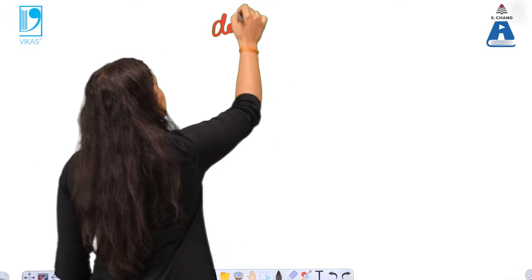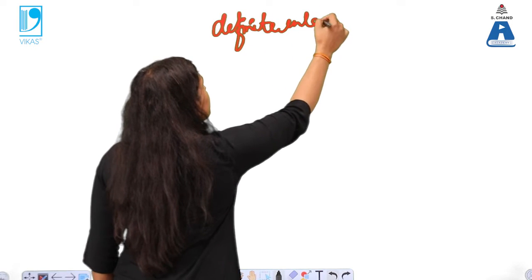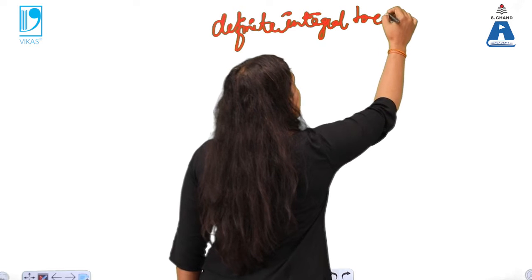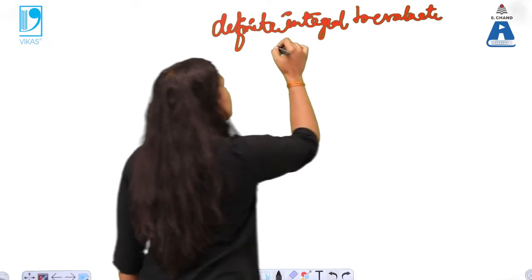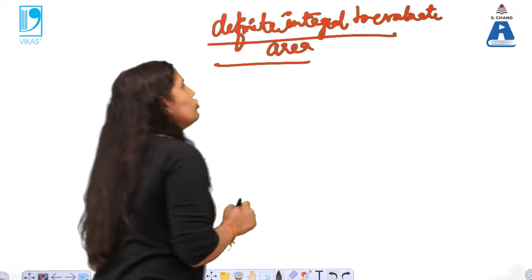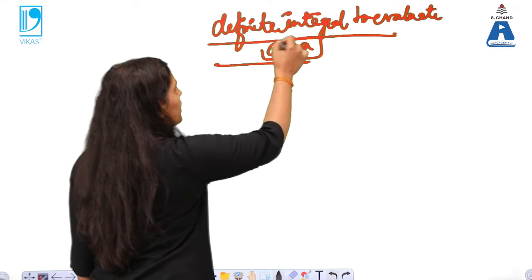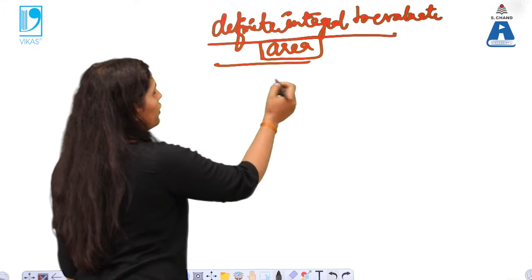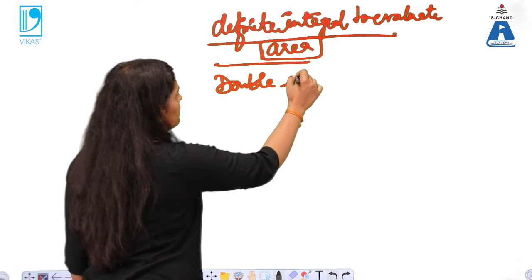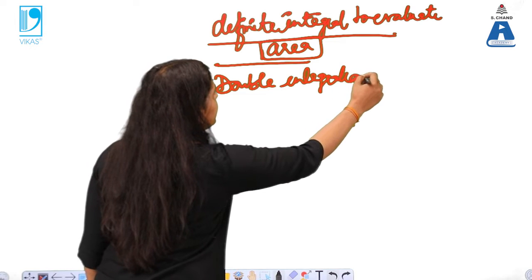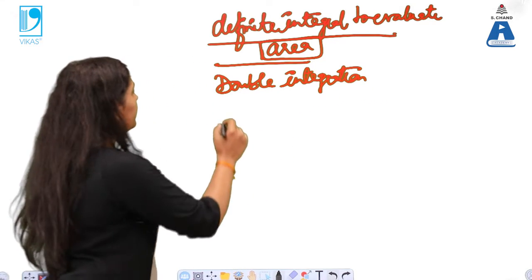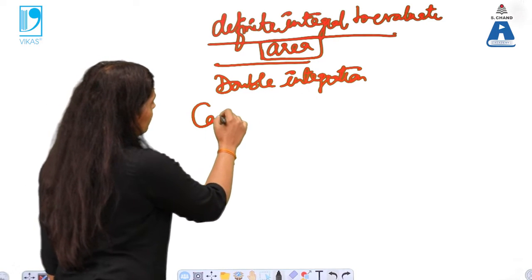How to use applications of definite integrals to calculate area. Definite integral means that you are given the limits. In case you are not given the limits, you should learn how to get the limits to calculate the area of such a region. We will calculate area by double integration — this is something new you are learning.